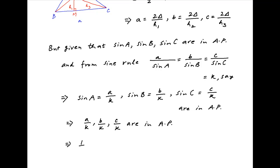Substituting the values of a, b, and c derived above, we get 1 upon k times 2 delta upon h1, 1 upon k times 2 delta upon h2, and 1 upon k times 2 delta upon h3 are also in arithmetic progression.